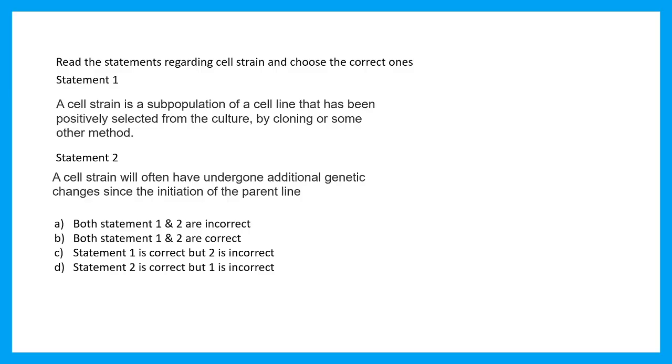Okay, starting with our questions. Question number one says read the statements regarding cell strain correctly and choose the correct option. Statement one says a cell strain is a subpopulation of a cell line that has been positively selected from the culture by cloning or some other method. Statement two says a cell strain will often have undergone additional genetic changes since the initiation of the parent line.